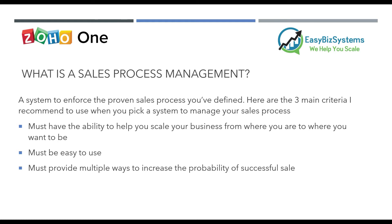There are three main criteria I recommend when picking a system to manage your sales process. First, the system must have the ability to help you scale your business from where you are to where you want to be — say, from one or two clients to 100 clients. Second, it must be easy to use. People don't like change, so introducing a new system already creates conflict; if it's also hard to use, whatever you try to implement will never work.